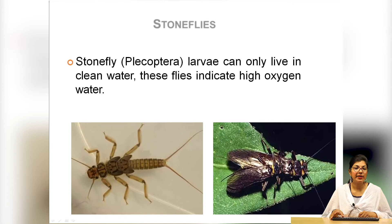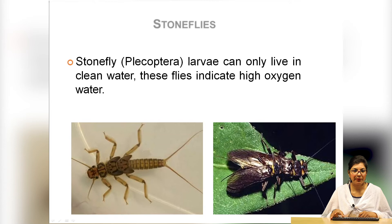Stonefly larvae can only live in clean water, so their larvae are found only where there is clean water with a high oxygen content. Their presence therefore indicates clean, oxygen-rich water.